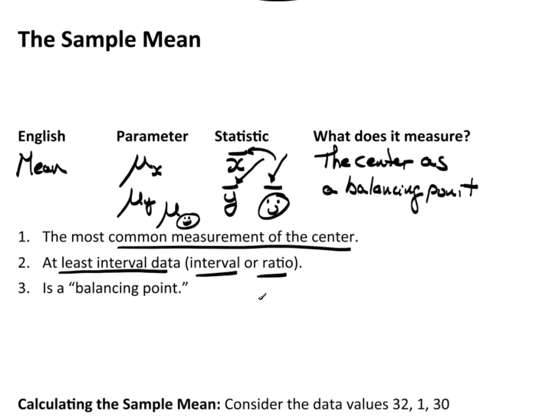To calculate the mean, you have to have at least interval data—that means interval or ratio data. The average for nominal data doesn't make any sense. If you had blonde hair and blonde hair and blonde hair and brown hair and red hair and gray hair, what's the average of that? That doesn't make any sense. And it is a balancing point.